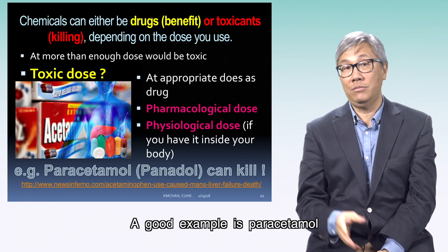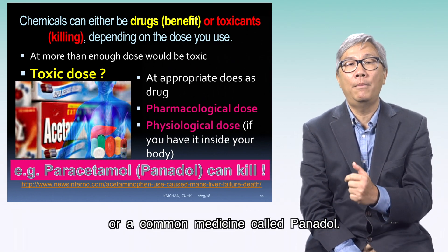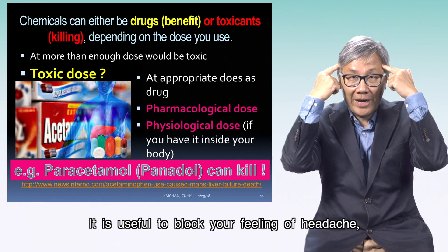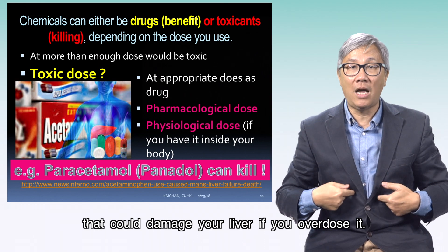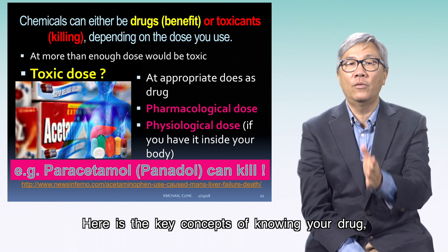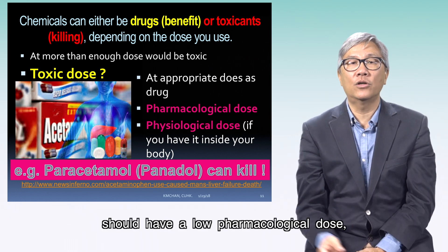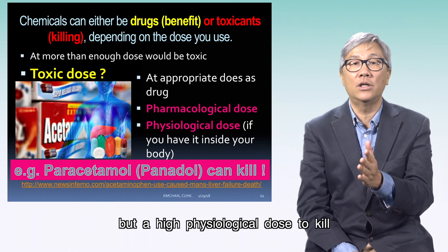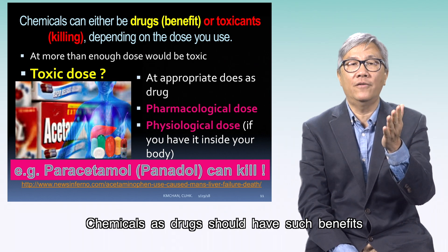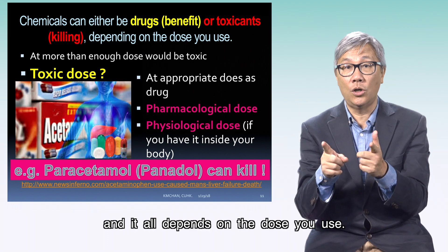A good example is paracetamol, a common medicine called Panadol. It is useful to block your feeling of headache, but it is a powerful drug that could damage your liver if you overdose it. You should have a low pharmacological dose but a high physiological dose to kill, to make it a safe drug. Chemicals as drugs should have such benefits over the risk to kill, and it all depends on the dose you use.